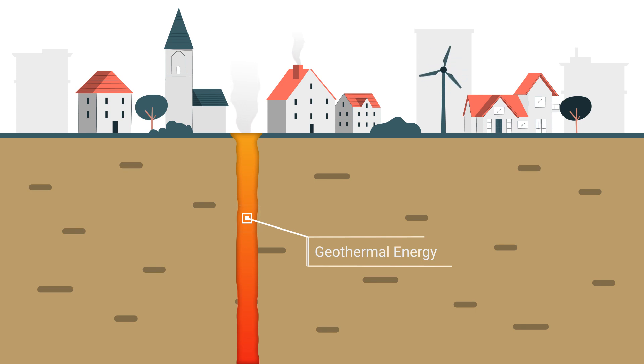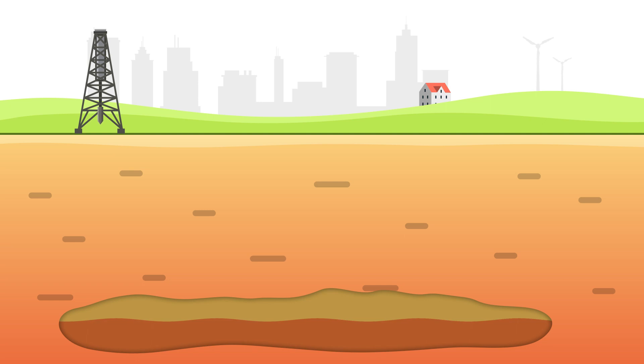Geothermal energy can be captured in two ways: geothermal power plants and geothermal heat pumps. To get hot water or steam to the surface, wells are drilled one or two miles deep at a geothermal power plant.